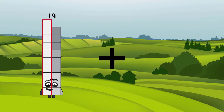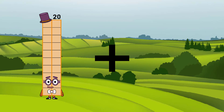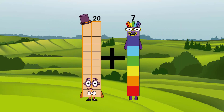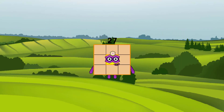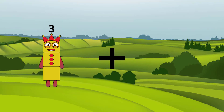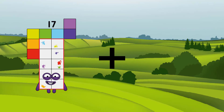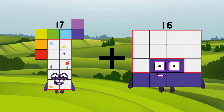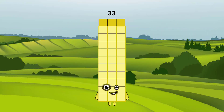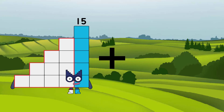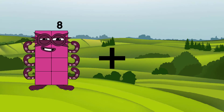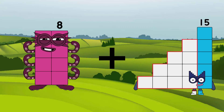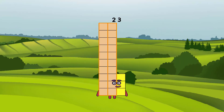20 plus 7 equals 27. 17 plus 16 equals 33. 8 plus 15 equals 33.